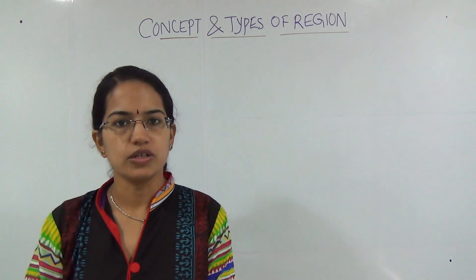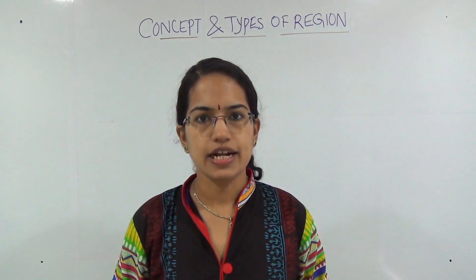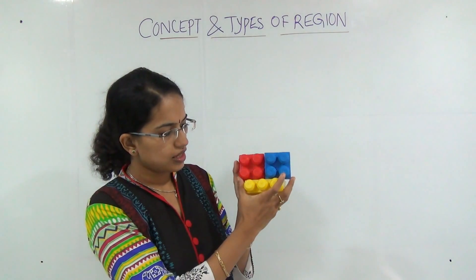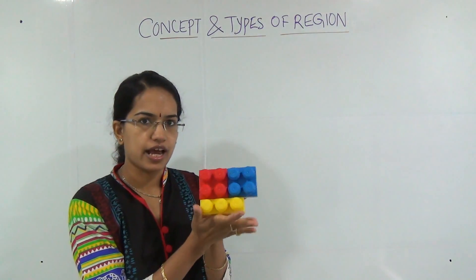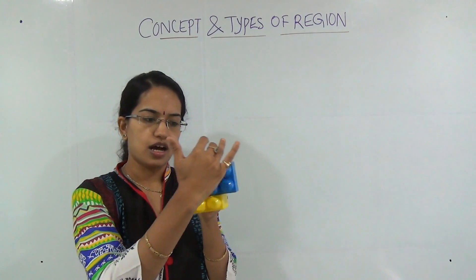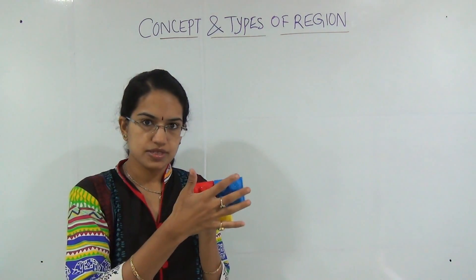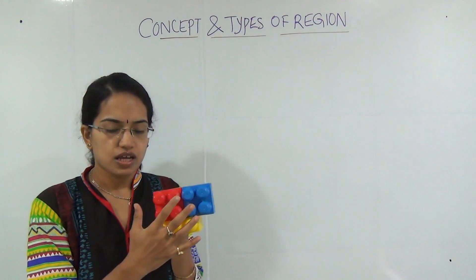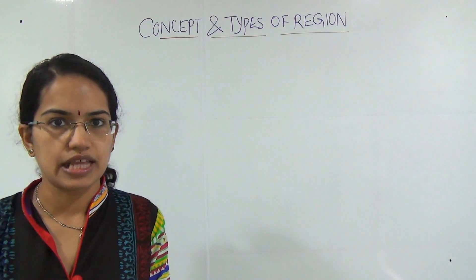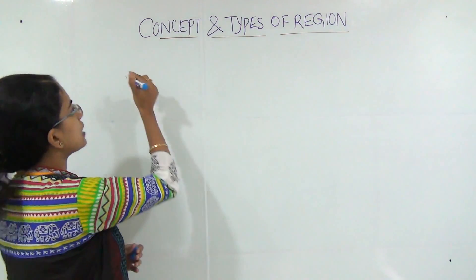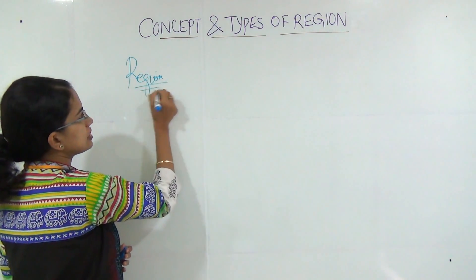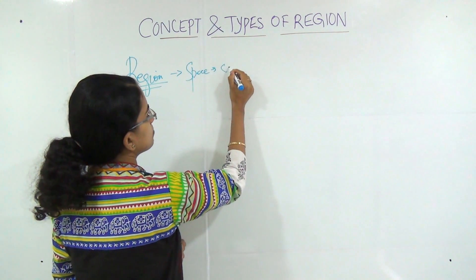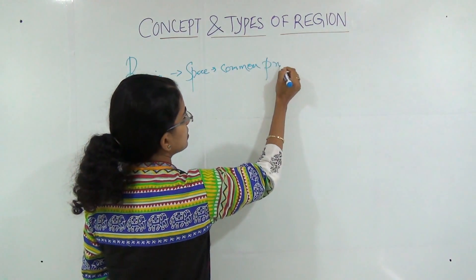In today's class, we will be talking about the concept of region. Let's start understanding the concept of region with a very simple example. I have three blocks here. If I am saying this is a region because all of these three are blocks, and I am using a block as a means of denoting something that has common characteristics, then it is known as a region. Region basically implies a unit of area or a space that shares some common properties or characteristics.